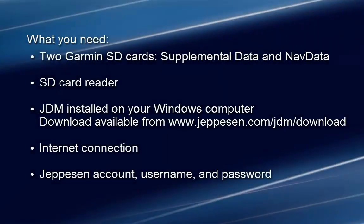To get started, you'll need two Garmin SD cards: the Supplemental Data Card and the Nav Data Card, an SD card reader, and JDM installed on your Windows-compatible computer. If you don't already have JDM installed, you can download it from jeppesen.com/jdm/download. You'll also need an internet connection, a Jeppesen account, your username, and password.